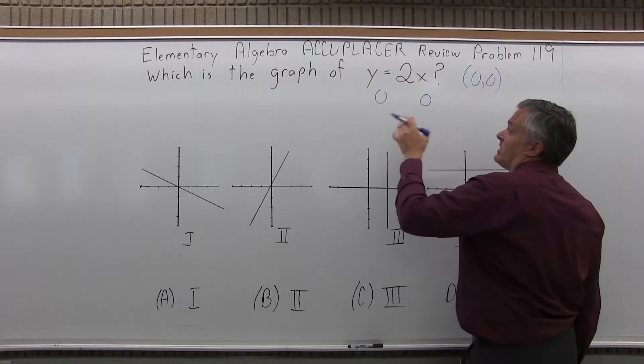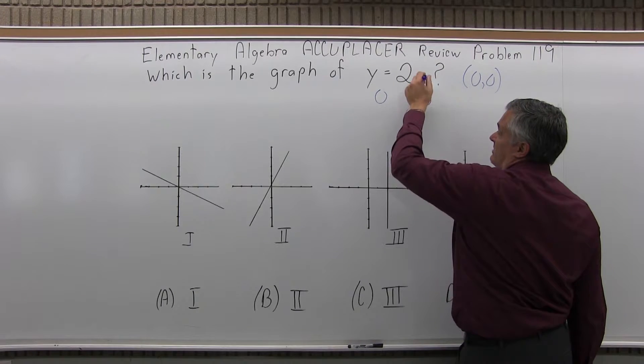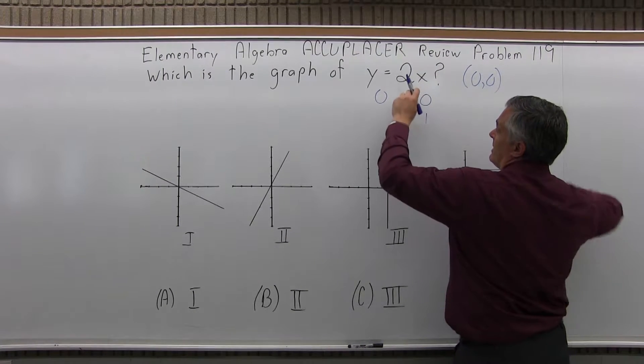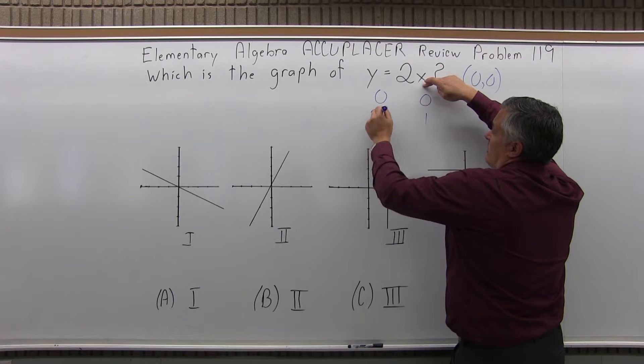So another combination of x and y that would make that equation true will be another point on the line. So let me let x equal 1. So if x is 1, 2 times x is 2 times 1, y would be 2.